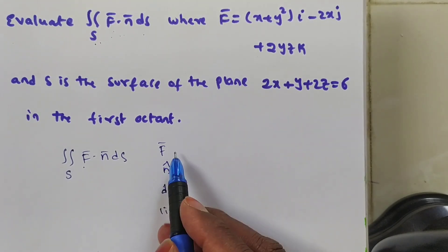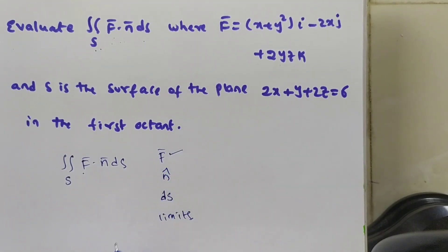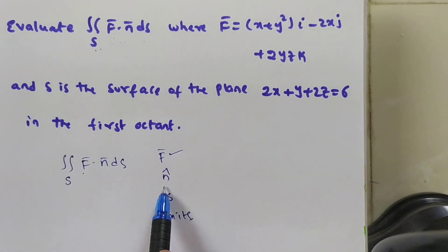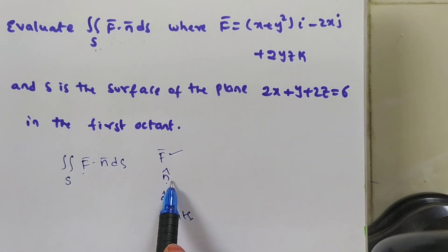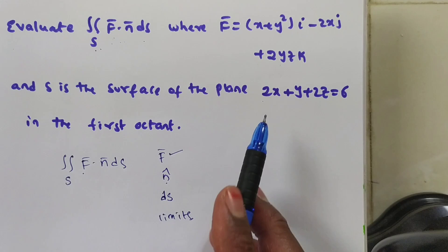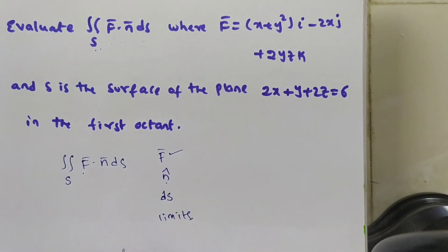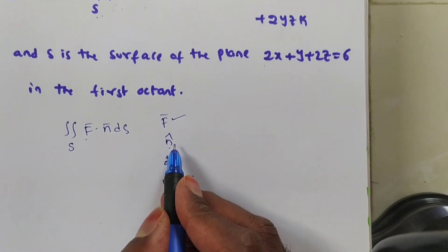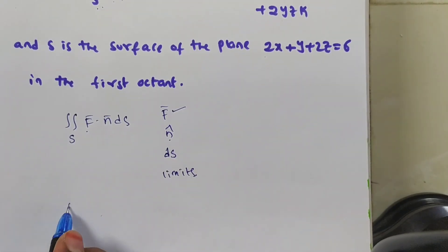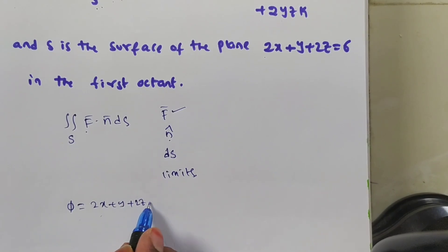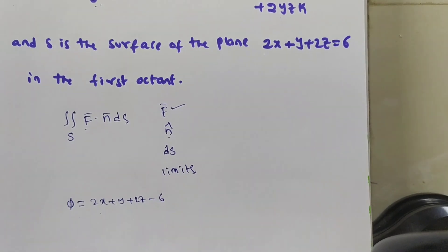f̄ is given in the problem, yes. A unit normal vector is not given, so what they gave is a surface. Consider the surface π = 2x + y + 2z − 6.